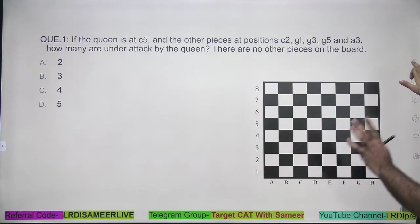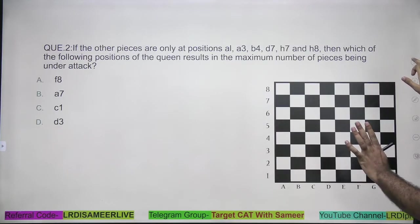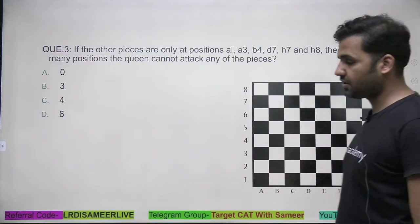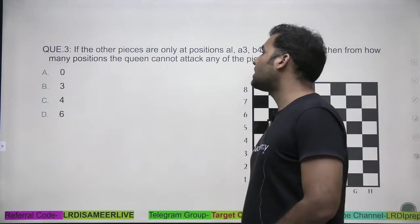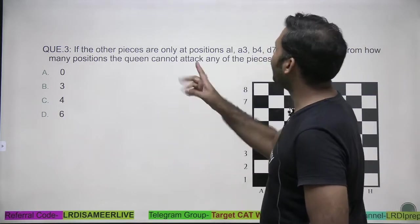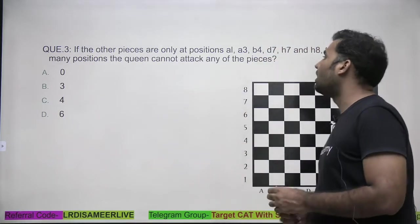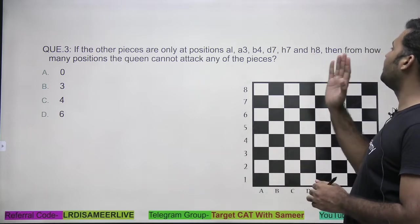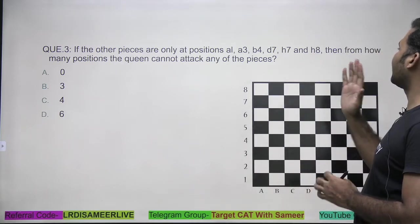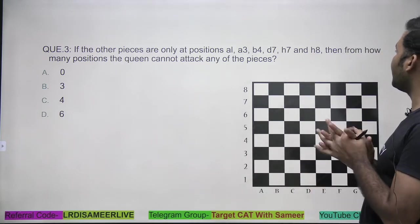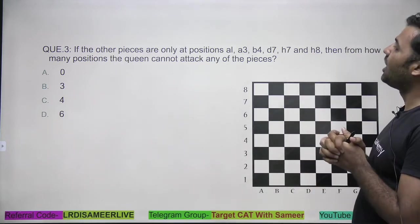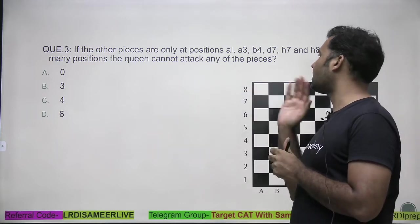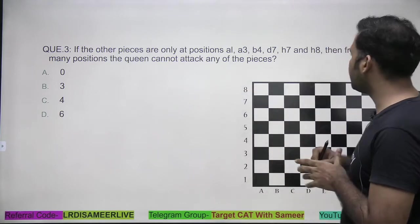Question number 1 is covered, question number 2 is covered. Let's have a look at question number 3. It says: if the other pieces are only at positions a1, a3, b4, d7, h7, and h8, then from how many positions can the queen not attack any of these pieces?